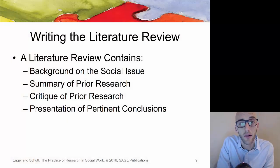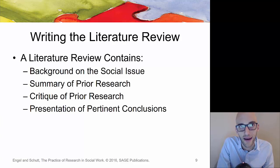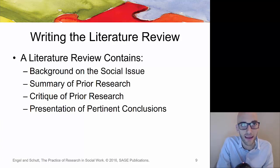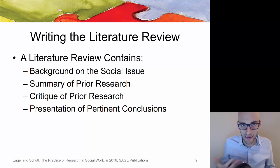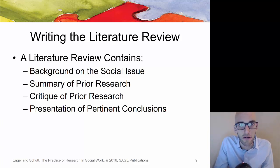Writing the literature review includes: background on social issues, an introduction to the problem, a summary of prior research, and a critique of prior research discussing its strengths and limitations — such as sample size, demographics, diversity. A lot of times there are design limitations, and you might find an author making strong claims based on weak data. Present a conclusion based on the summary of all research found, which forms your discussion and conclusion section.